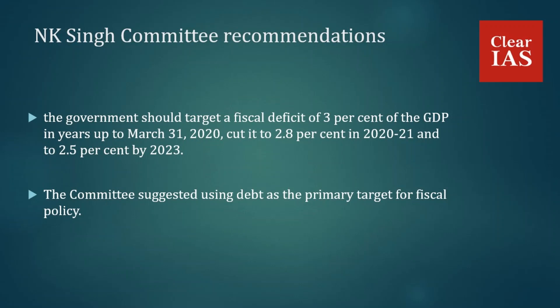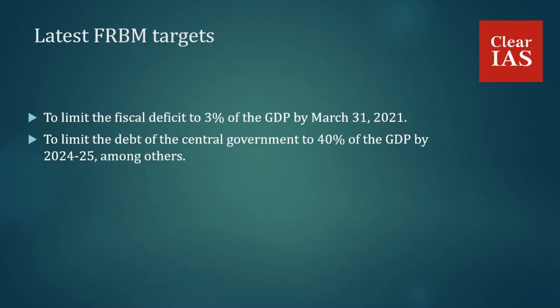Now let's look at the latest FRBM targets for India. Based on the committee's recommendations, the government set targets. The latest provisions of the FRBM Act require the government to limit fiscal deficit to 3% of GDP by March 31st 2021, and debt of the central government to 40% of GDP by 2024–25. These are the major targets.